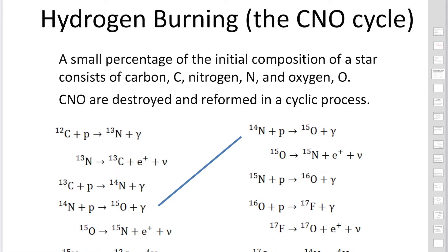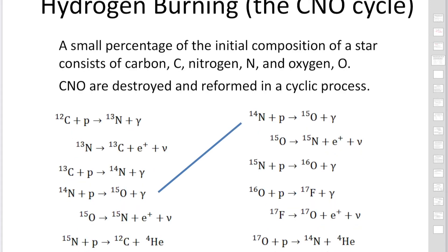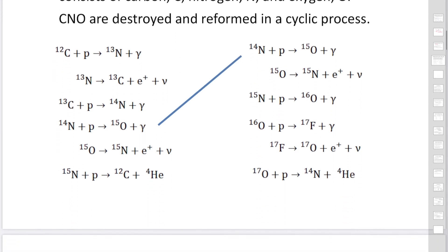In the CNO cycle, carbon-12 reacts with a proton to produce nitrogen. Nitrogen-13 is unstable and decays to carbon-13 plus a positron plus a neutrino. Carbon-13 captures a proton to produce nitrogen-14. Nitrogen-14 reacts with a proton to produce oxygen-15. Oxygen-15 decays to nitrogen-15 plus a positron. Nitrogen-15 can react with a proton to produce carbon-12 plus helium-4, or to produce oxygen-16 plus photons. Oxygen-16 reacts with a proton to produce fluorine-17, which decays to oxygen-17 plus a positron plus a neutrino. Oxygen-17 then reacts with a proton to produce nitrogen-14 plus helium-4.